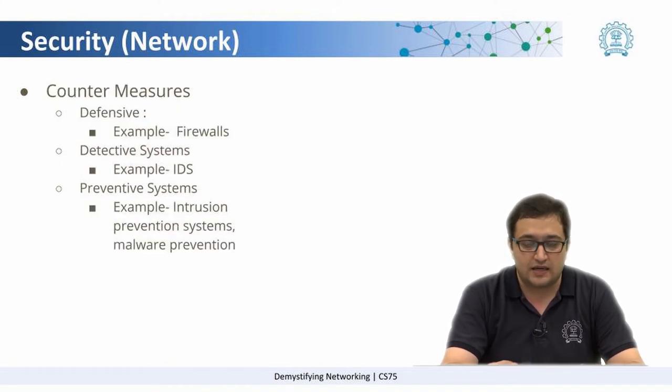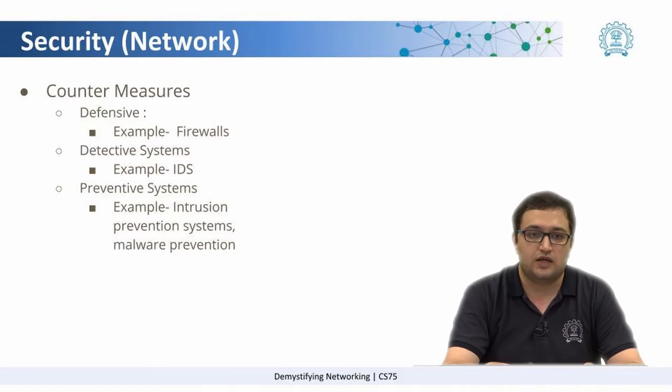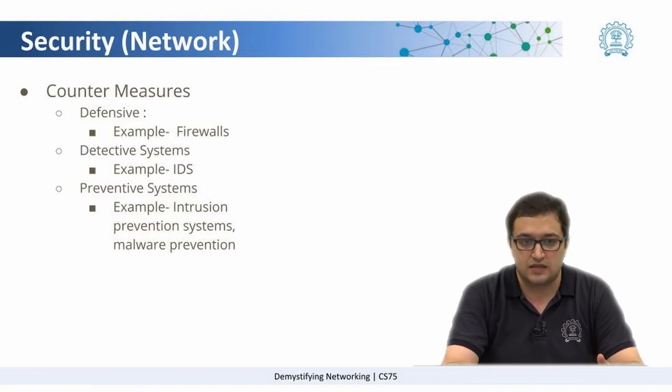What kinds of countermeasures can be put in place to take care of such breaches? There are three types of countermeasures. One is called the defensive countermeasure. Let us look at your house in this case; let's discuss these three types looking at a house.